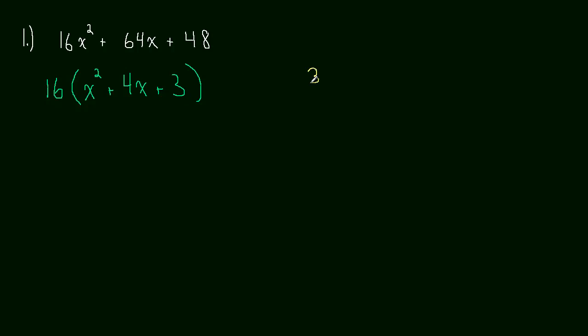The factors of 3, positive 3, that add up to 4. Well, that's easy. That's just 1 and 3. 1 plus 3 equals 4. And so this is going to factor really, really nicely, quick and easy. This will become 16 times (x + 1) times (x + 3).